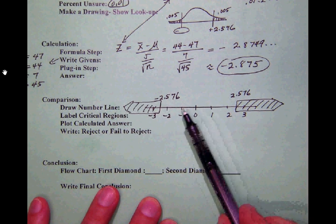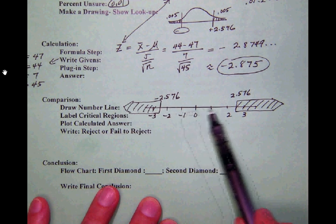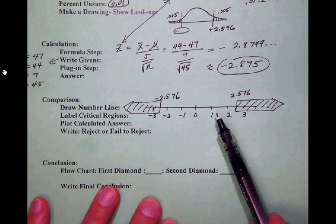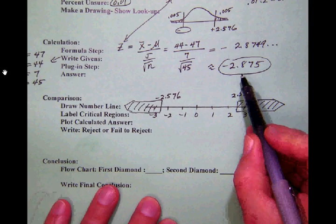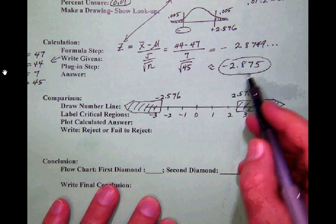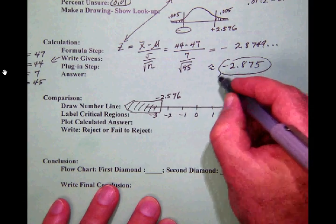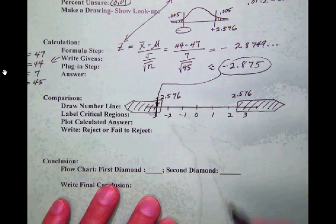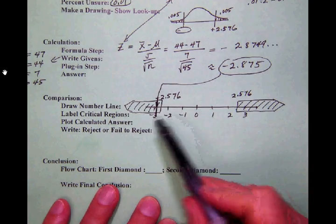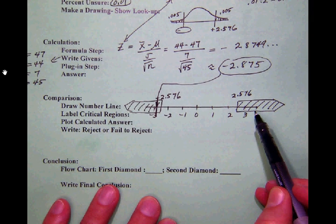If for example our test statistic falls in here then we will fail to reject. So we look at our test statistic here at negative 2.875 and we will notice that that's going to fall over here. It's going to fall in the rejection zone or as some of us call this the critical region.